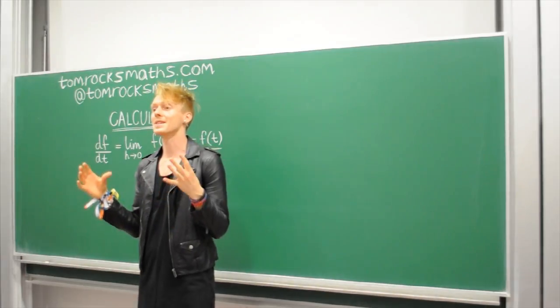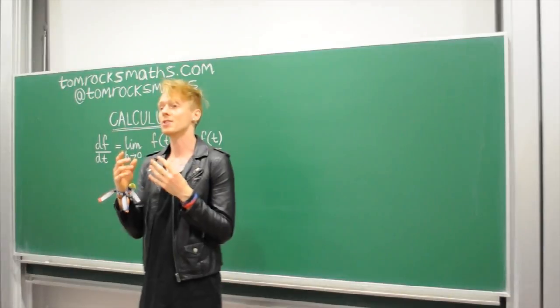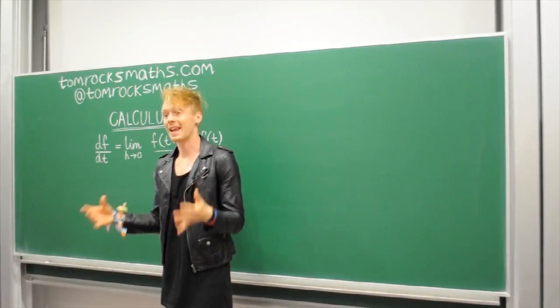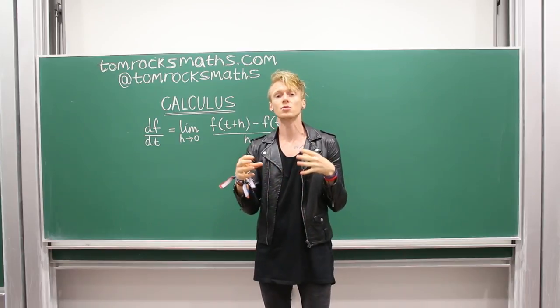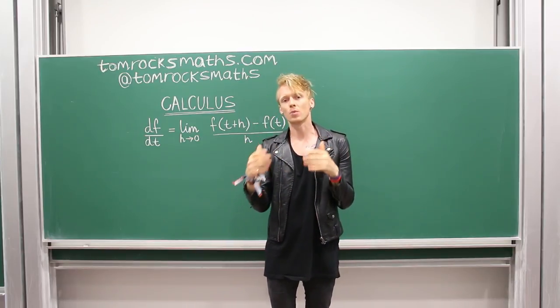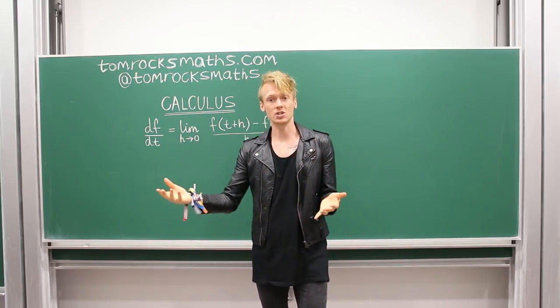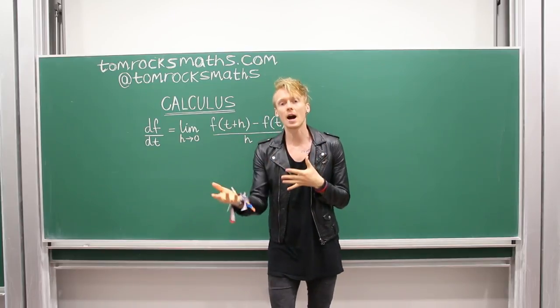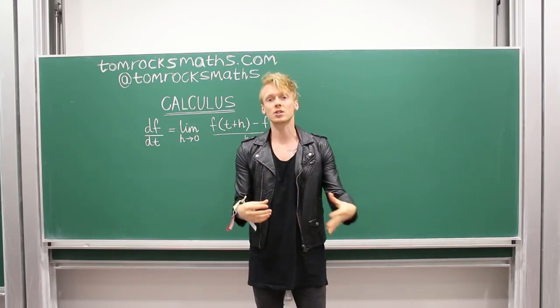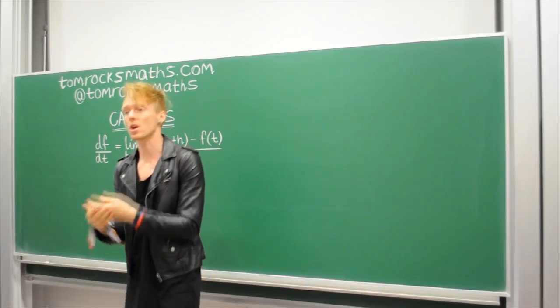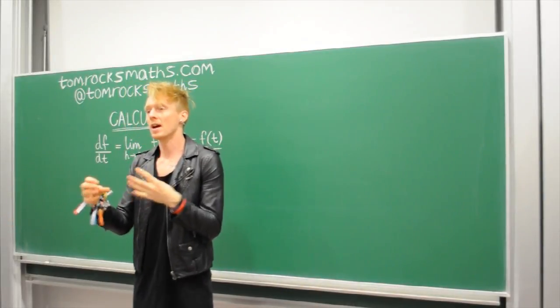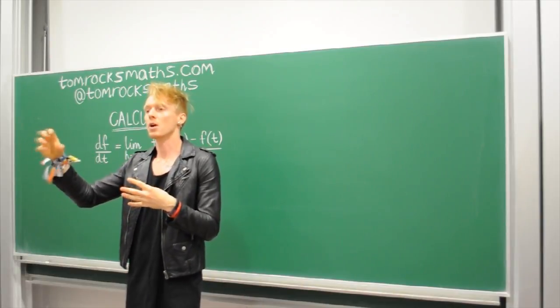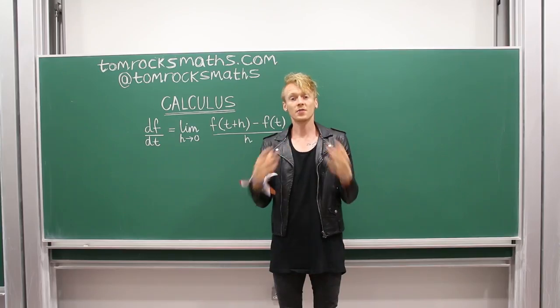This time we're looking at the brainchild of Sir Isaac Newton and German mathematician Gottfried Leibniz, which is calculus. And this equation tells you how to calculate the rate at which a quantity changes, whether that's over time, over distance, maybe change in pressure over change of temperature. You can change any variable and you want to know how your quantity will change as a result.